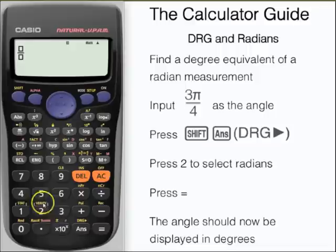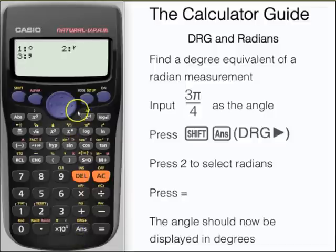Let's try that again. This time we're going to input 3 pi over 4 radians. Press shift and ANS to access the DRG function, and 2 for radians. Press equals, and here we have the degree equivalent, 135 degrees.